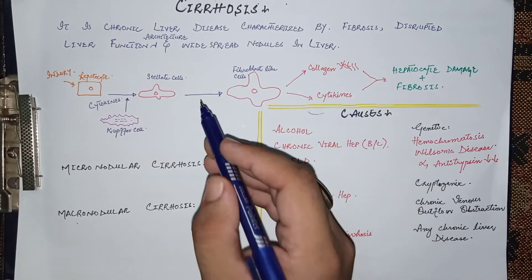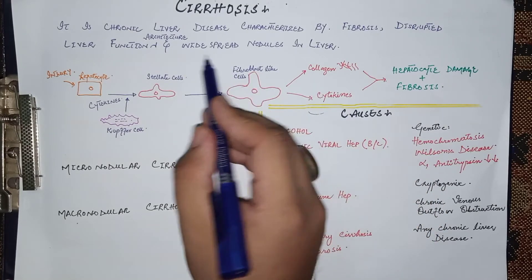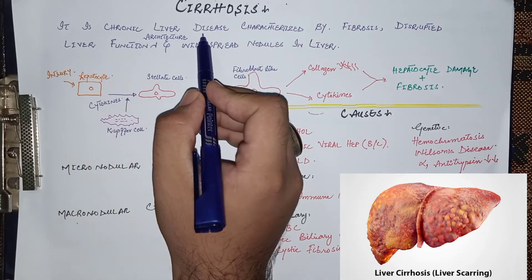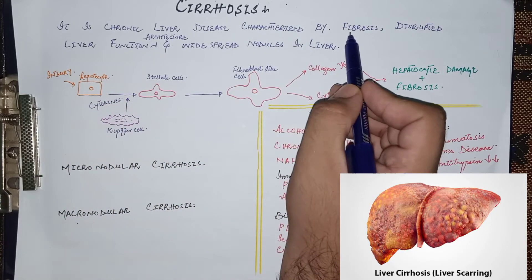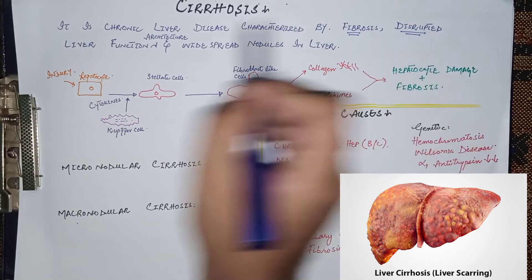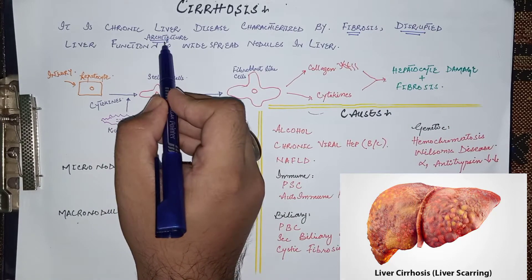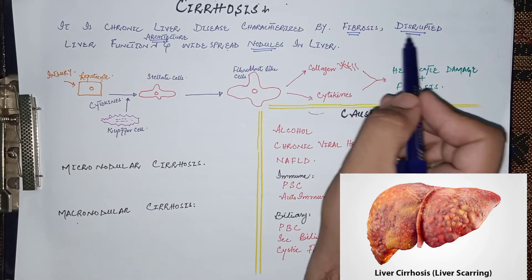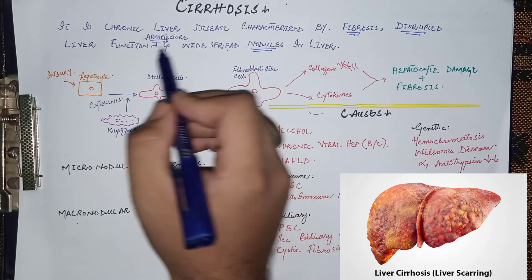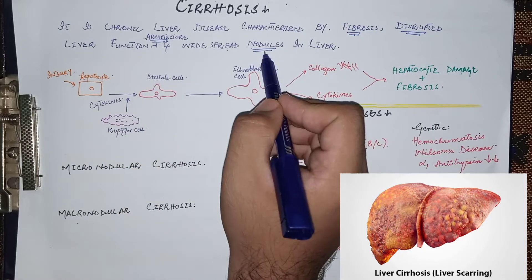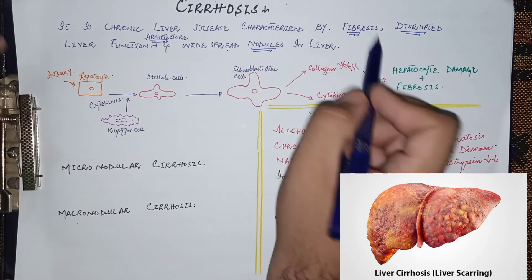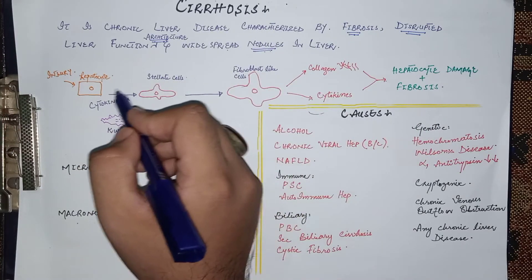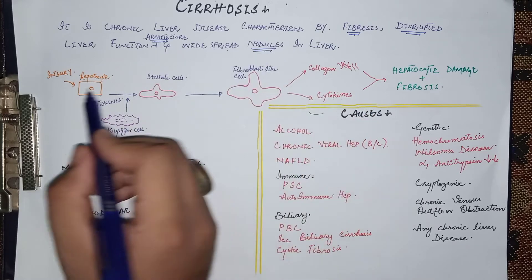Assalamu alaikum everyone. In hepatology today we are going to talk about cirrhosis. Cirrhosis is a chronic liver disease which is characterized by fibrosis, disrupted or deranged liver function and architecture, and widespread nodule formation in the liver. These three features — fibrosis, disrupted architecture, and nodules — constitute the definition of cirrhosis.